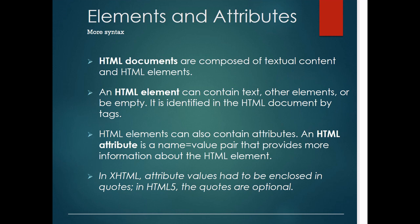Elements and attributes are two key points of any HTML document. HTML elements can contain text, other elements, or be empty; they are identified in the HTML document by tags. For example, inside a tag if you write 'p', that is the paragraph element; 'b' is the bold element; h1, h2, h3, h4 are heading elements — all of these are considered elements.